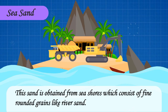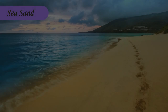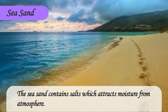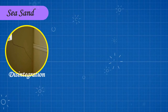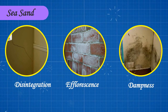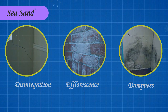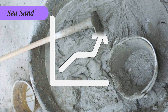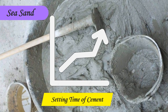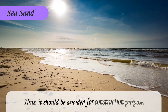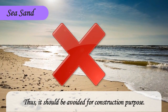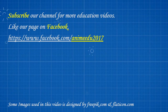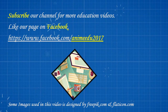Sea sand: This sand is obtained from sea shores and consists of fine rounded grains like river sand. The sea sand contains salts which attract moisture from the atmosphere. This absorption will lead to disintegration, efflorescence, and dampness. Apart from this, sea sand increases the setting time of cement. Thus, it should be avoided for construction purposes.